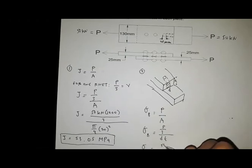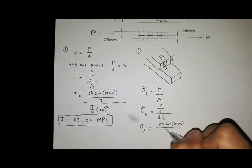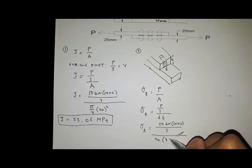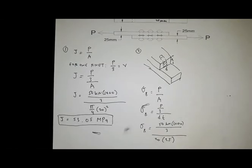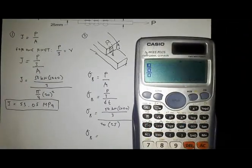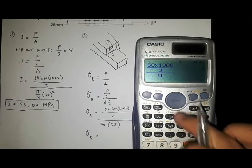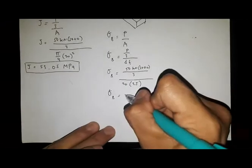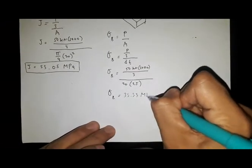By substitution, bearing stress equals 50 kilonewtons multiplied by 1,000 over 3, divided by D of 20 times T of 25. Therefore, bearing stress equals 50 times 1,000 divided by 3, over 20 times 25, which equals 33.33 megapascals.